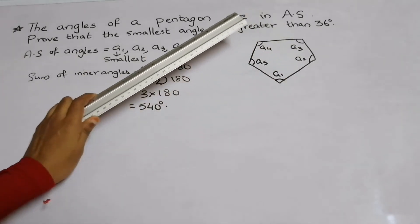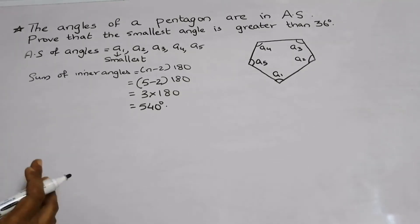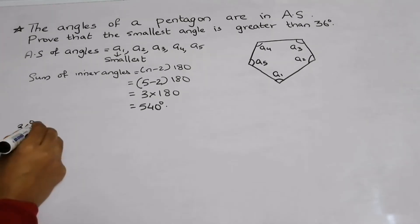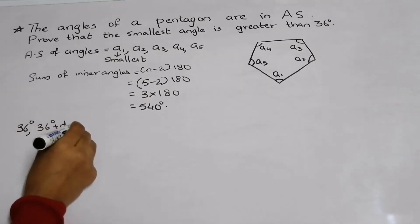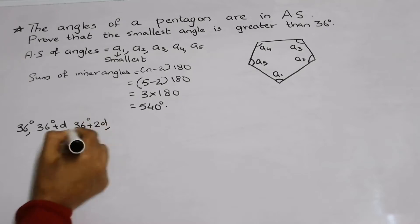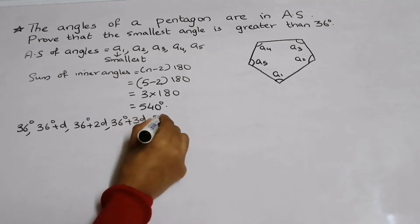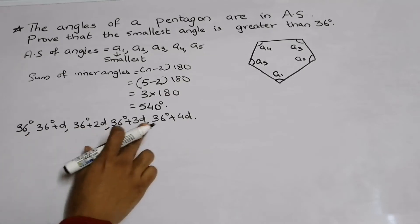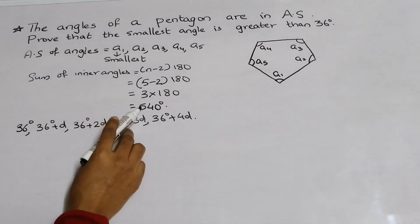If you add all five angles together, you get 540 degrees. Now let me consider the angles. I am considering A1 as 36 degrees. As they are in arithmetic sequence, the angles are: 36, 36+d, 36+2d, 36+3d, and 36+4d for A1 through A5. The sum of all these angles equals 540.